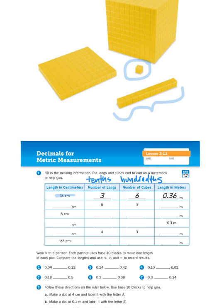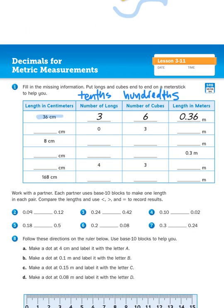Same with the longs or the rods. A long is 10 centimeters wide. So that means it is one-tenth of a meter because 10 times 10 is 100 and there are 100 centimeters in a meter. So when we are talking about longs and cubes, what we're really doing here is talking about tenths and hundredths of a whole. And the whole or the 1 is the meter.